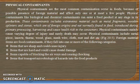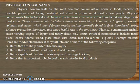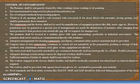Physical contaminants are the most common contaminants in food because of the possible presence of foreign materials. Physical contamination involves extraneous materials such as metal fragments and wood, which pose a risk to consumers. Physical contaminants include metal pieces, insect parts, thorns, wood, glass, mesh, cloth, rust, dirt, stones, and other foreign materials. These can cause varying degrees of injury, dental damage, choking, and rarely death.